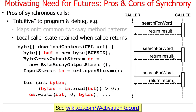Here's a very simple example. This is a method that's going to download the contents at a URL and return an array of bytes as the result. It's going to make method calls like read and write in a loop. All the state — like buff, output stream, input stream, bytes — these things all retain their values across calls to functions like read and write. So it makes the code really easy to write and easy to reason about. When control comes back from calling read or write, your current local state is just where you left it.